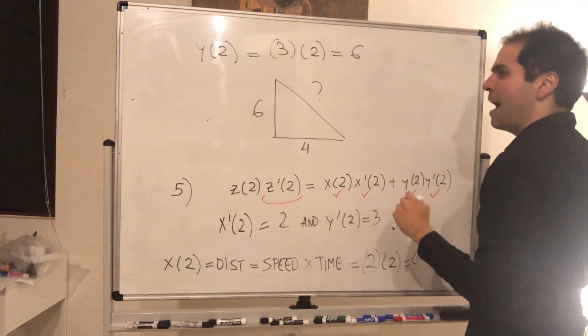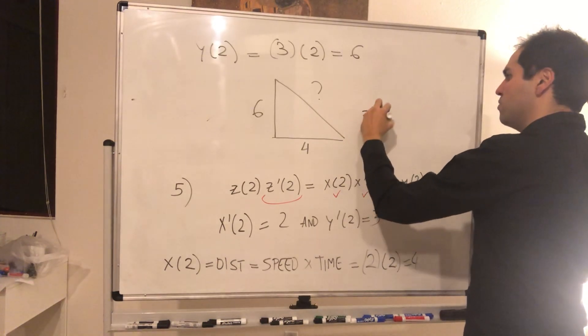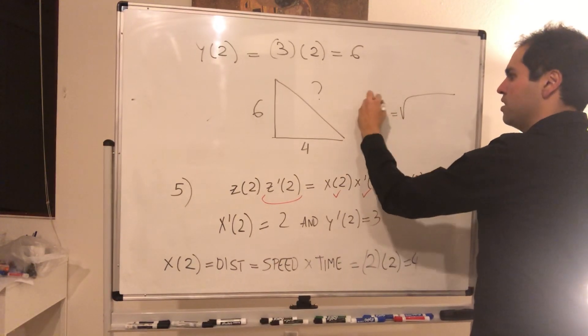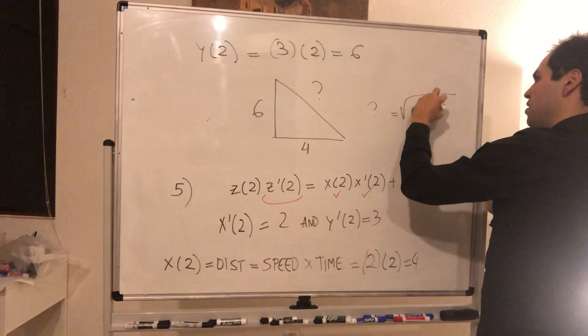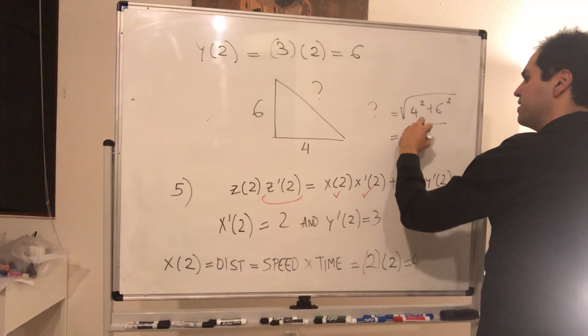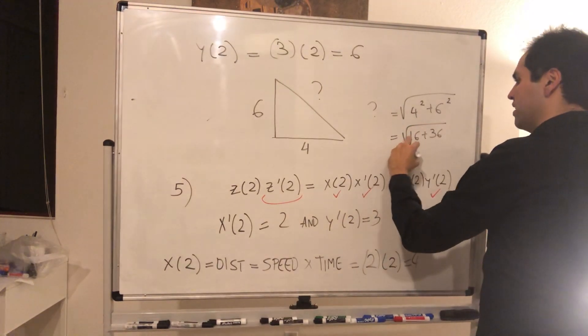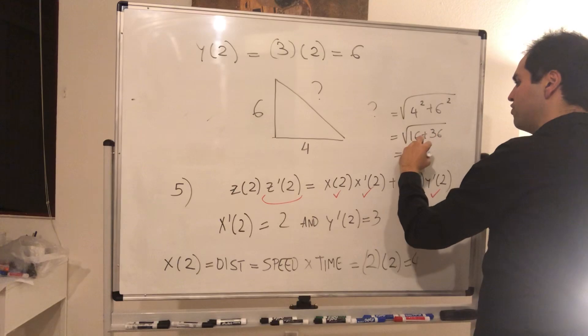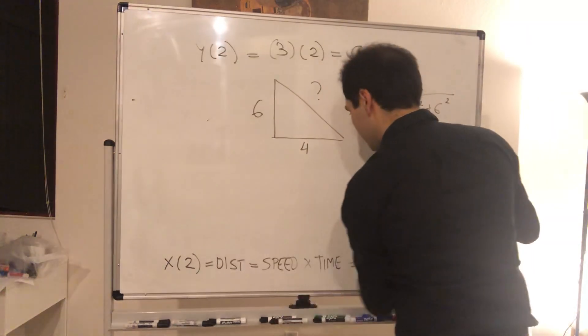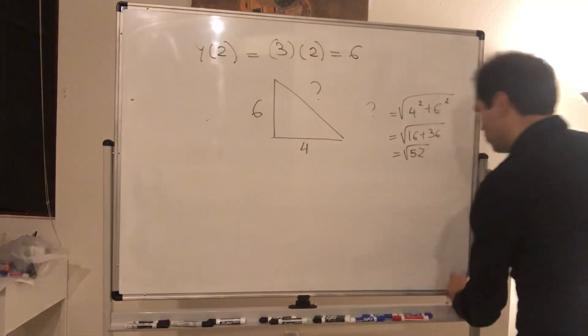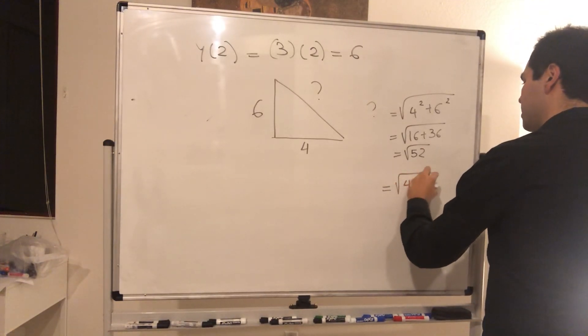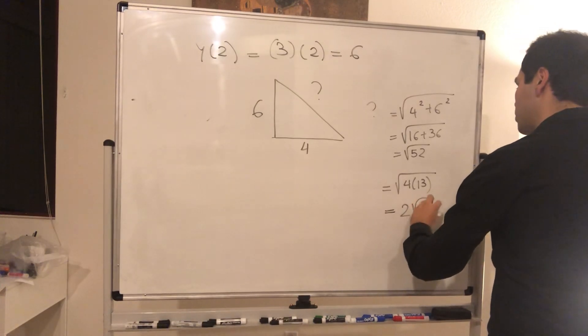And the question is then, what is the rest? Well, for this we can just use again the Pythagorean theorem. So z of two, that just becomes square root, so it's just square root of four squared plus six squared, and I believe that's square root of 16 plus 36, and that's square root of 52, which I believe you can just simplify to be, so square root of just four times 13, and essentially this becomes two times square root of 13. And that is precisely z of two.